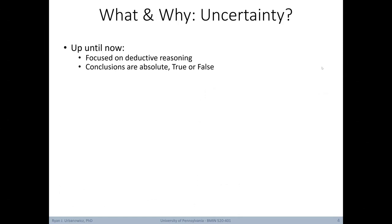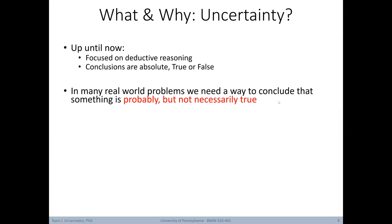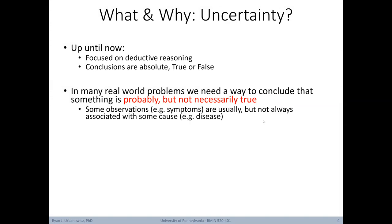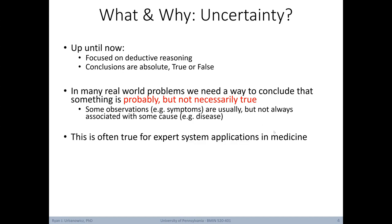So first off, why do we care about uncertainty? Up till now, we've focused on deductive reasoning exclusively — situations where the conclusions are absolute, either true or false. Of course, in many real-world problems, we need a way to conclude that something is probably, but not absolutely or necessarily true. For example, some observations such as symptoms are usually but not always associated with some cause, or some specific disease. This is often true in many applications of expert systems across the field of medicine.